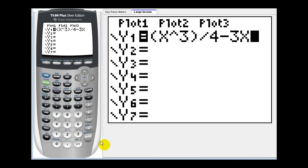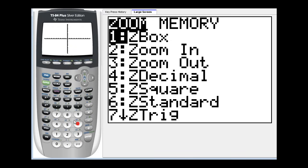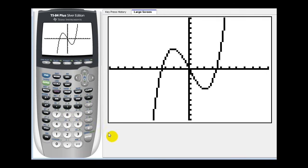Now to make sure we have the standard window, we can press zoom six. This looks like a very good window to calculate the relative extrema. If we didn't have a good view of the graph here, we'd have to adjust the window by pressing this button here.